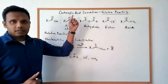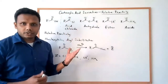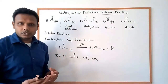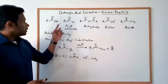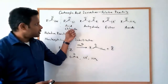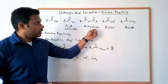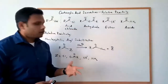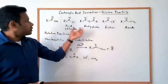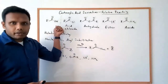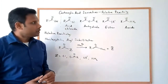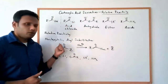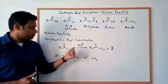Carboxylic acid derivatives basically refers to a family of molecules that are all related to the carboxylic acid. This includes acid fluoride, anhydrides, esters, and amides. They're all related to the parent carboxylic acid, and they all undergo a common reaction, which is the nucleophilic acyl substitution.